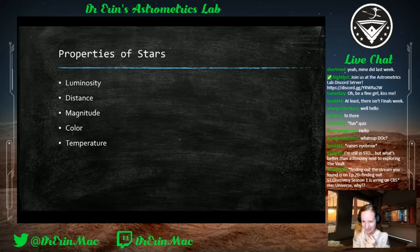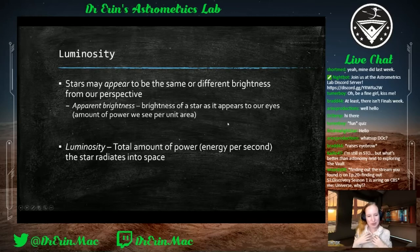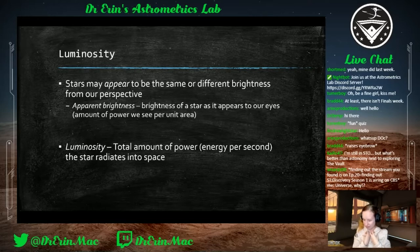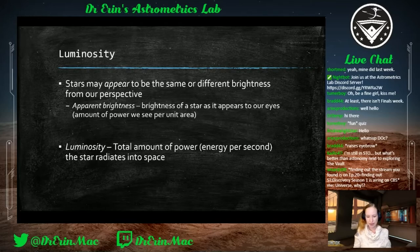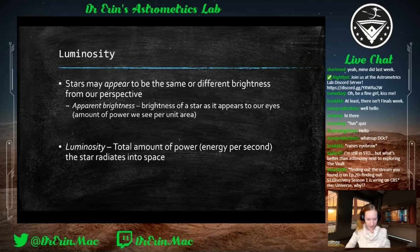First, let's talk about luminosity — really the star's brightness. We have two different terms: apparent brightness, which is what the brightness appears to be when we look out into space. When you go outside and look up at the stars, some will look like they're the same brightness as others, but actually they may be less bright than their neighbors.